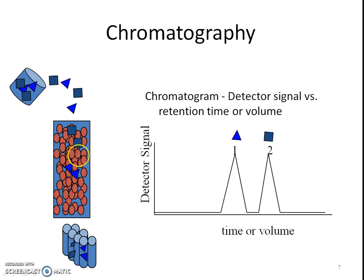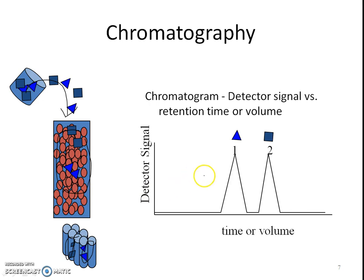The video we just saw was an example of column chromatography, where the stationary phase is embedded in the column. The mixture along with the mobile phase transfers through it, and we achieve separation depending upon the differential affinities of the solute for the stationary phase and the mobile phase.